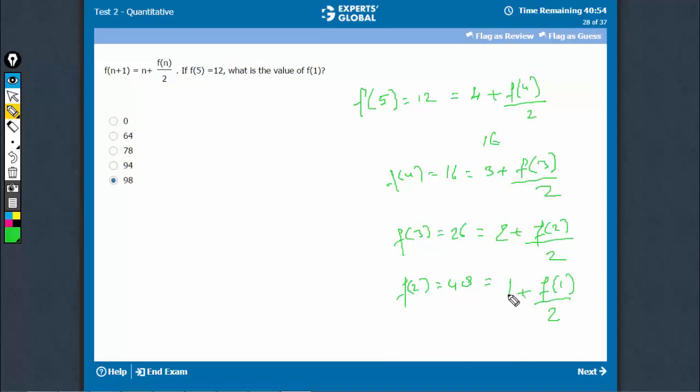So 48 minus 1, 47 into 2, 94. That means F1 is equal to 94. That's the correct answer.